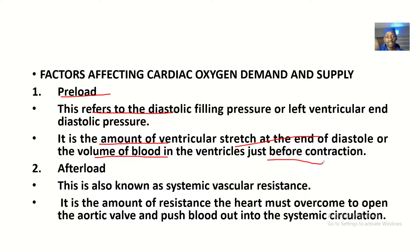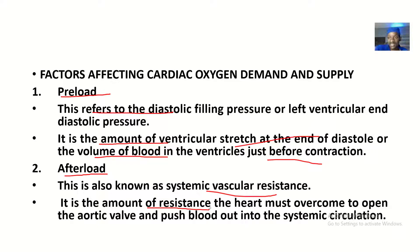Preload affects cardiac oxygen demand. Now let's look at afterload, also known as systemic vascular resistance. It's the amount of resistance the heart must overcome to open the aortic valve and push blood out into the systemic circulation. When the ventricles fill up, this blood needs to be pushed out — mostly from the left ventricle — and pushing new blood into the systemic circulation encounters significant resistance. The heart overcoming this resistance is what we call afterload.